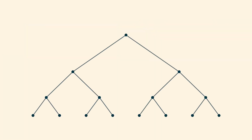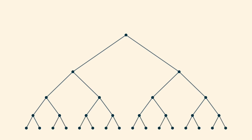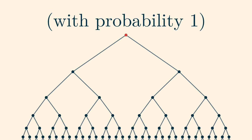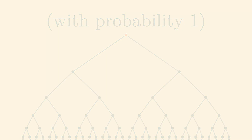Now, what is the limit of the sequence of complete finite binary trees? A first guess might be that the limit is the random rooted graph whose value is, with probability 1, the infinite binary tree, rooted at the top. After all, this is what happens with the path graphs and the grid graphs, as we saw before.